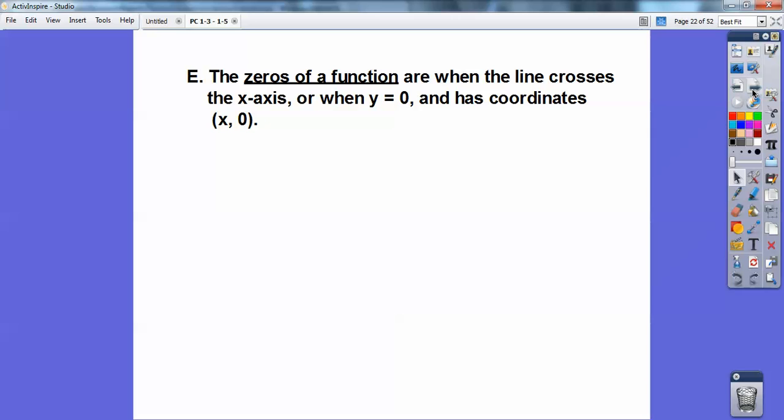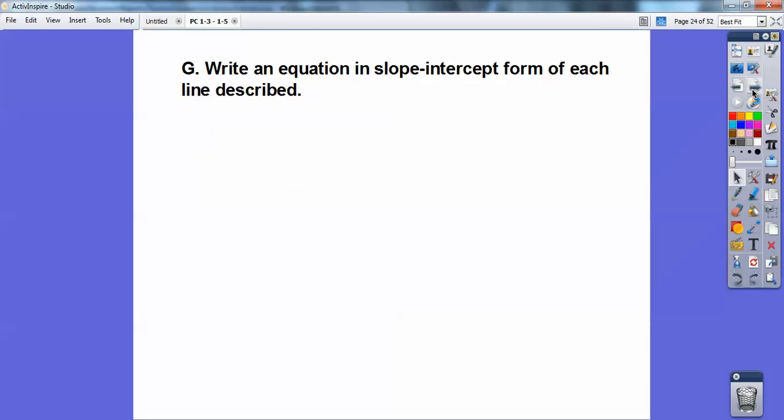The zeros of a function are when the line crosses the x-axis, or when y equals zero. It has the coordinates x comma zero. It's like your x-intercept. In the case where the slope equals zero, you have the constant function y = b, where b is some number like y equals 2. Your graph is a horizontal line. Y equals a number is a horizontal line. X equals a number is a vertical line.